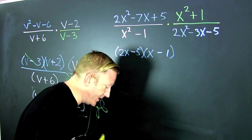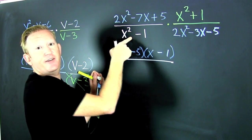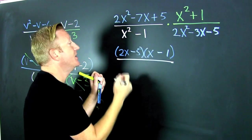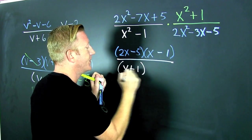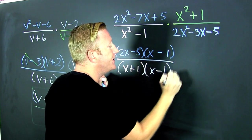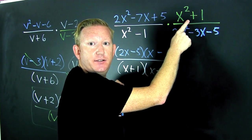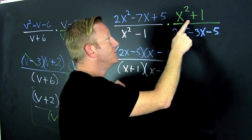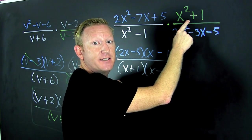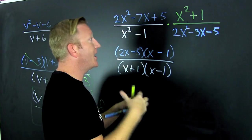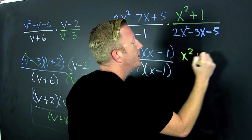This guy down there in that denominator — difference of squares, so I got to get that. That's X plus 1, X minus 1. Now up here, does that factor? X squared plus 1? Not really — it doesn't factor over the real numbers, so we're not going to touch it. Leave it alone. So that's an X squared plus 1.